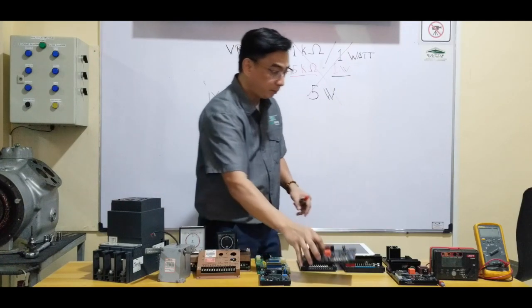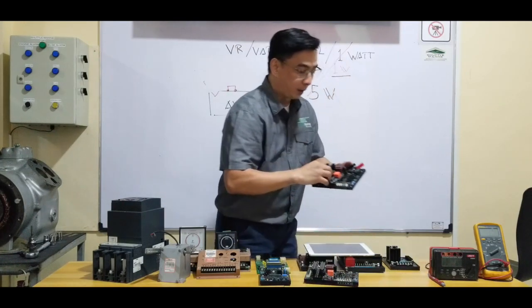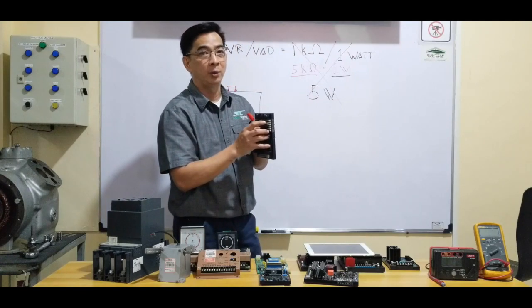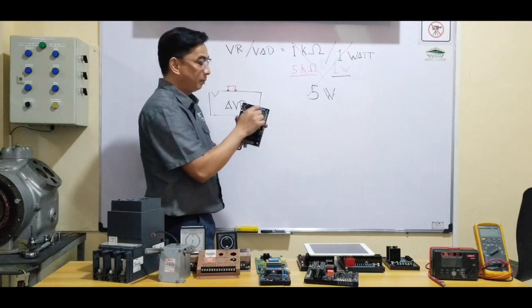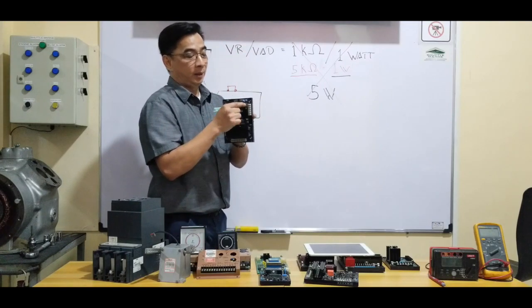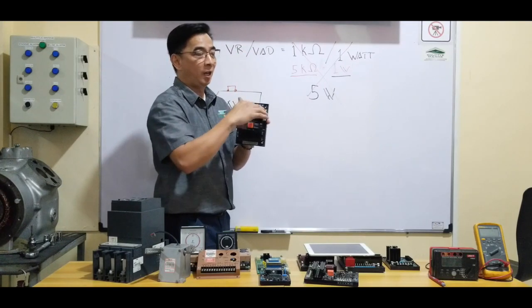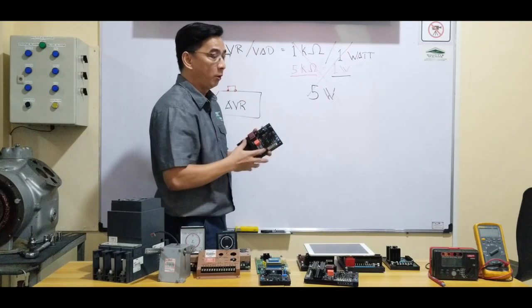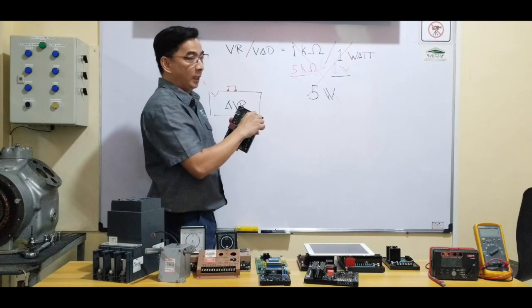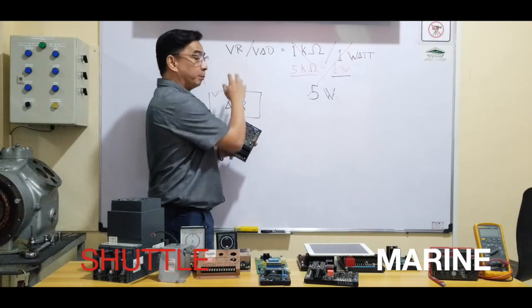So every AVR, it has a potentiometer jumper or link together. So if I don't have a remote adjustment, that link stays there. But if I have an optional remote on the switchboard or whatever location on your facilities or onboard the vessel, then we need to remove this and install the potentiometer.